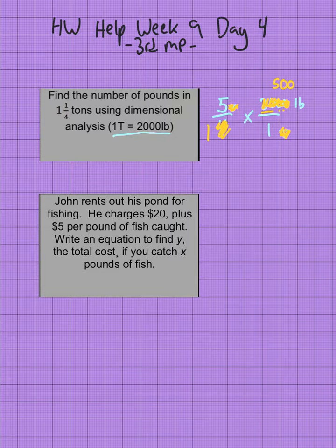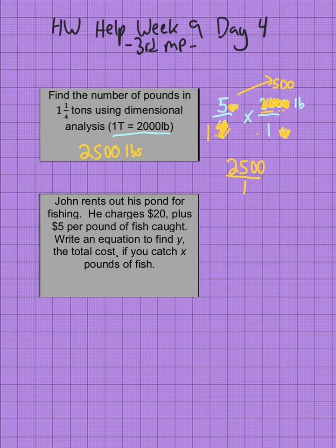Now I just have to multiply the 5 times the 500. 5 times 5 is 25, add the two zeros. 1 times 1 is 1. That means our answer is 2,500 pounds.